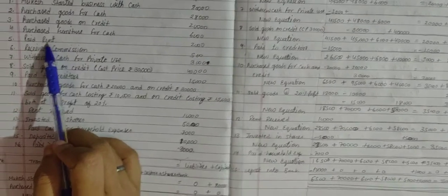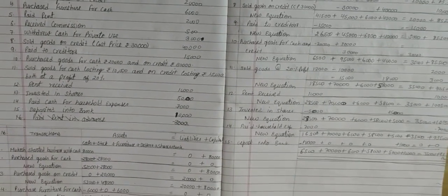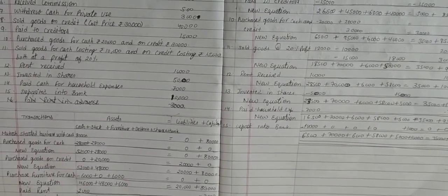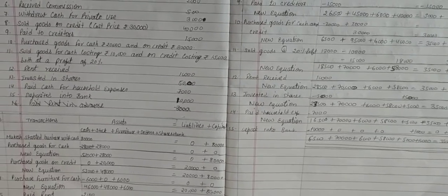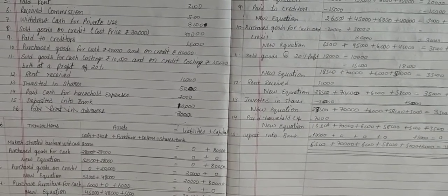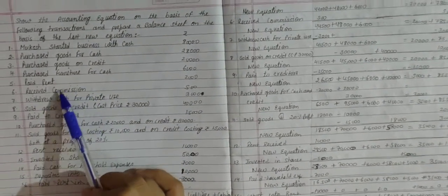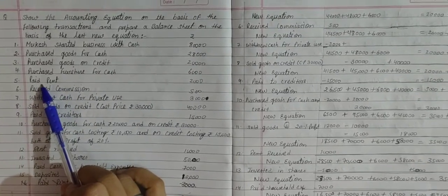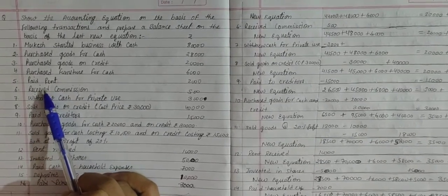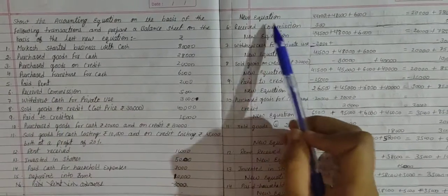Transaction 5: Paid rent. Anything paid affects two accounts — cash account and capital account. Paid rent reduces cash as well as capital. Cash reduces by Rs. 2,000 and capital reduces by Rs. 2,000. New equation: cash 44,000, stock 48,000, furniture 6,000, creditors 20,000, capital 78,000.